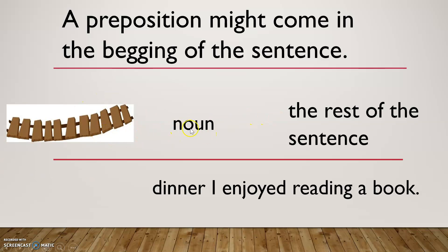Bridge, then the noun, then the rest of the sentence. Let's go down. Now, the bridge, the place of the bridge is empty. Dinner, I enjoyed reading a book. After dinner, I enjoyed reading a book. Look at the preposition. It's in the beginning of the sentence. It's not always in the middle. Remember.